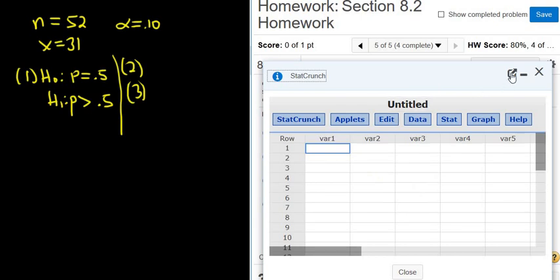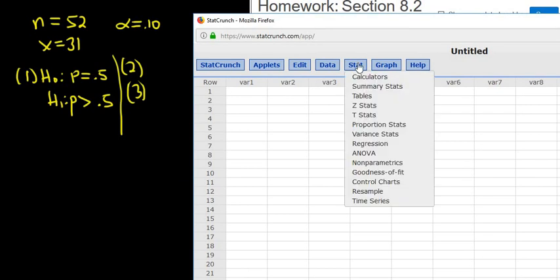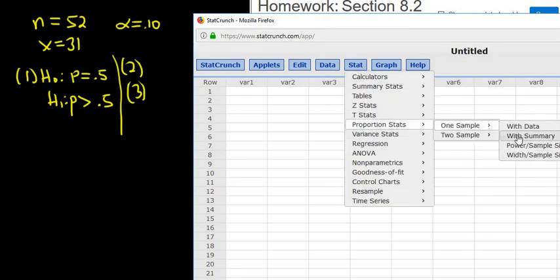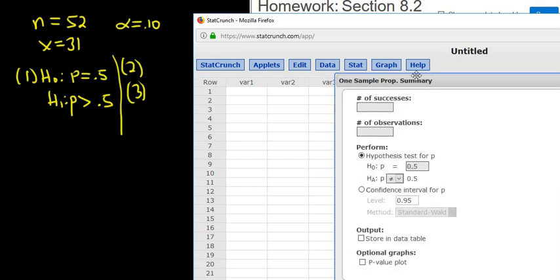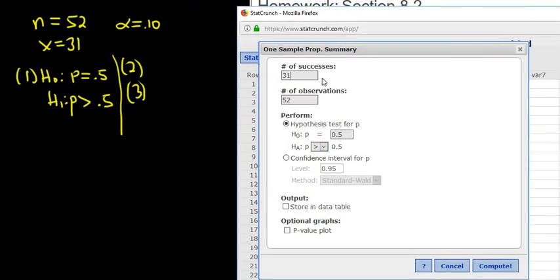Then we go to Stats, Proportion Stats, one sample with summary. Left-click, then enter everything. So successes is 31, observations is 52, and then here we change this to greater than. Right, change it to greater than. So everything looks okay. There's our successes, there's our observations, there's our equals, there's our greater than. Click Compute.